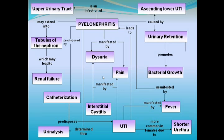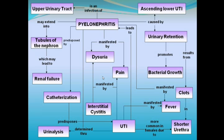Urinary retention develops when the duct that drains the bladder becomes blocked. Acute urinary retention may be caused by stone sludge in the urethra or urethral strictures. It always presents with acute onset pain of intolerable severity. Urinary retention always requires medical attention for treatment, symptom relief, and detection of the underlying cause. Failure to treat the condition can lead to UTI or damage to the urinary tract and kidneys.